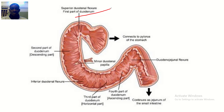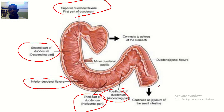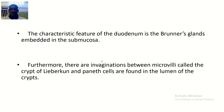Looking at this image of the duodenum, you can see the superior duodenal flexure — that's the first part — the descending second part, the inferior duodenal flexure, the third part of the duodenum, and the fourth part of the duodenum.